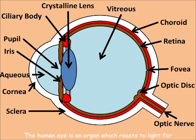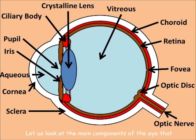The human eye is an organ which reacts to light for several purposes. Let us look at the main components of the eye that allow a human to see.